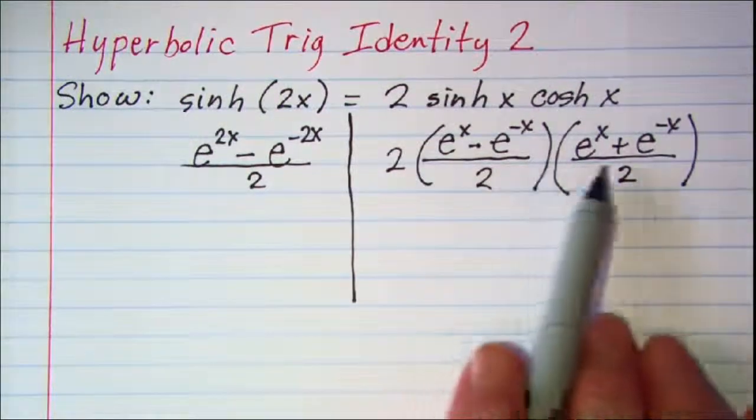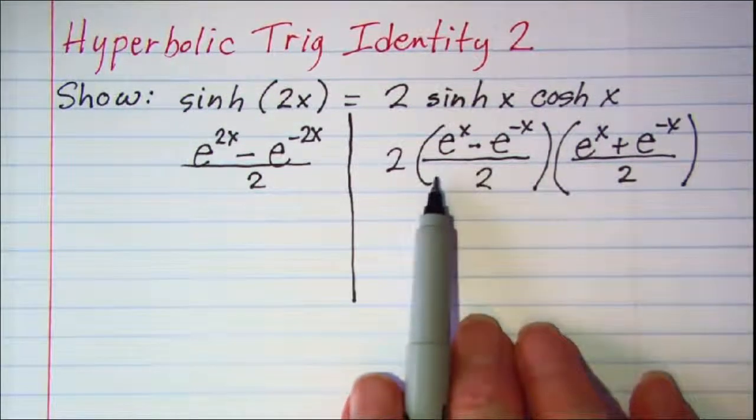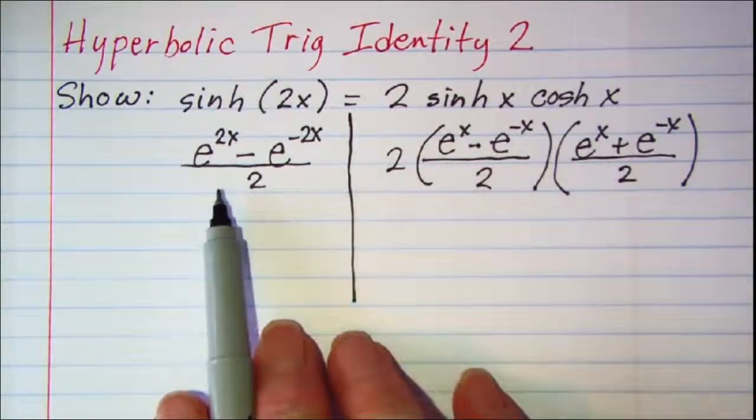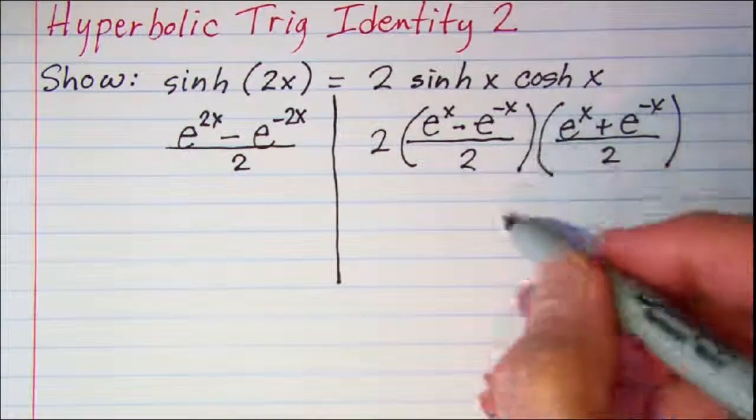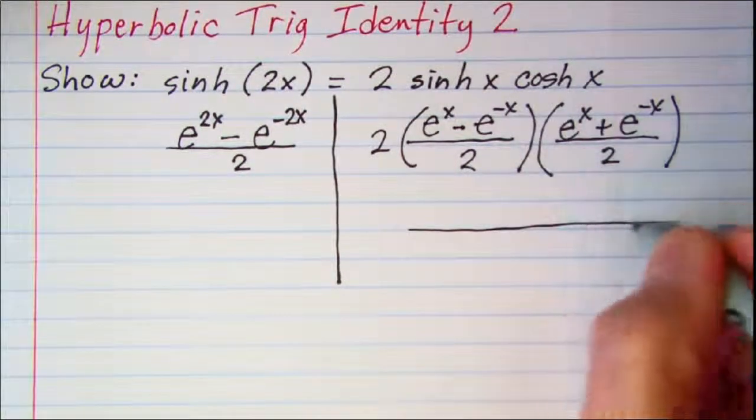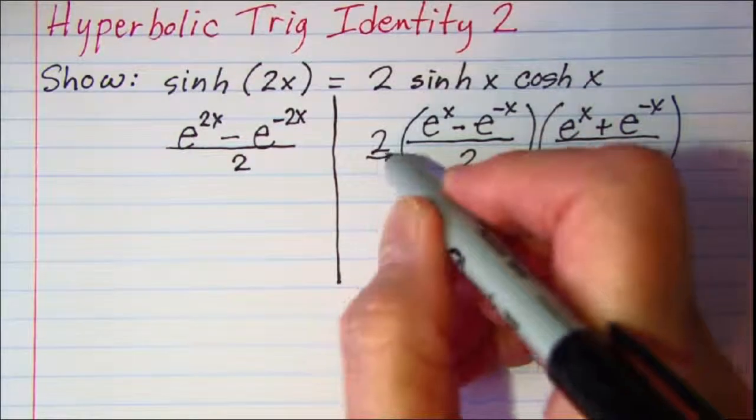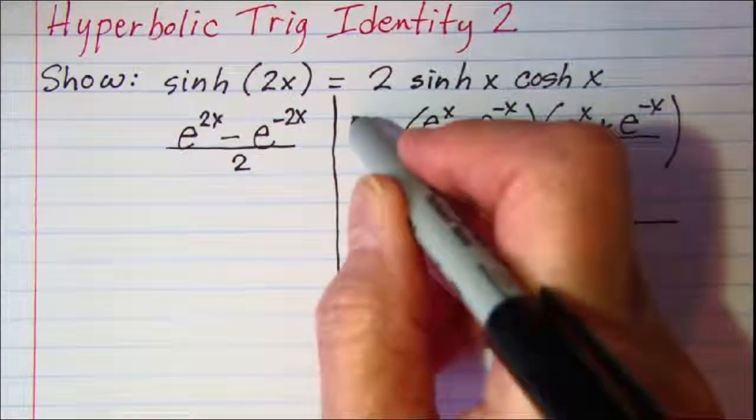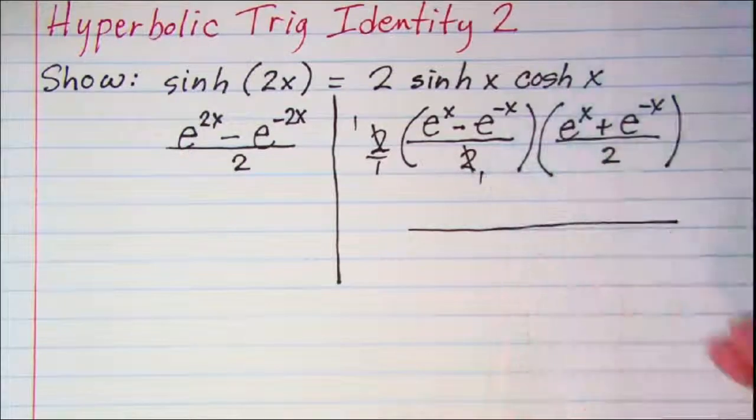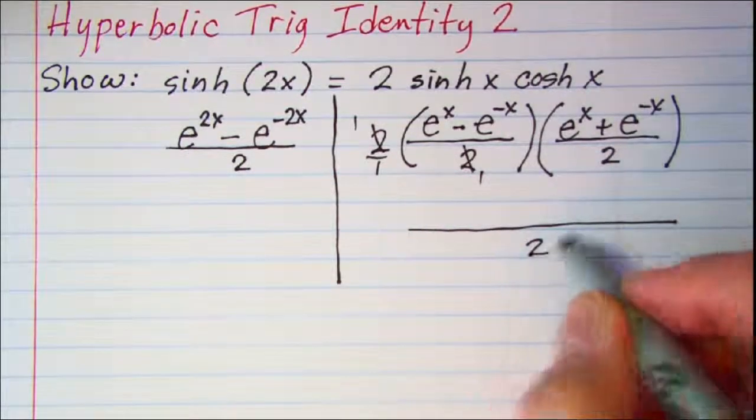So I'm going to work on this right side and show that it's equal to this left side. Let's multiply. This 2 is 2 over 1, so I can cancel that 2 with this one, and I'll have just a 2 in the denominator.